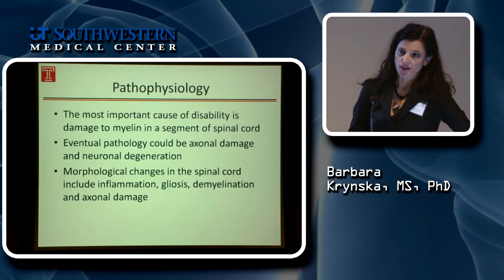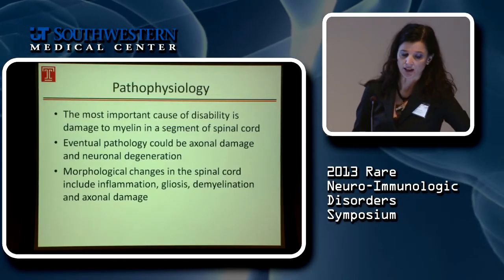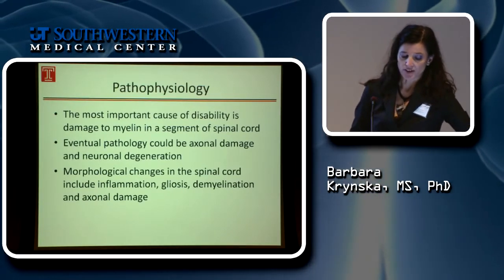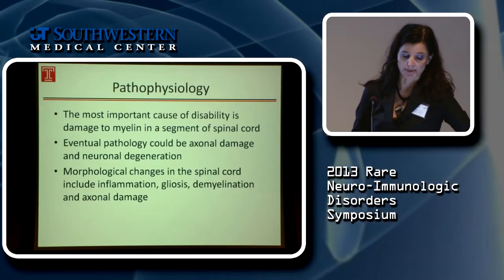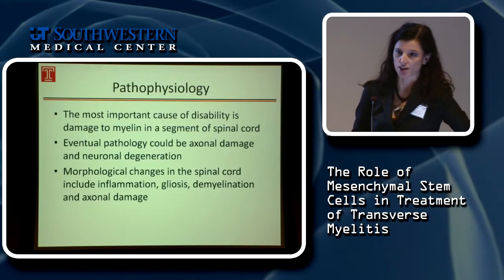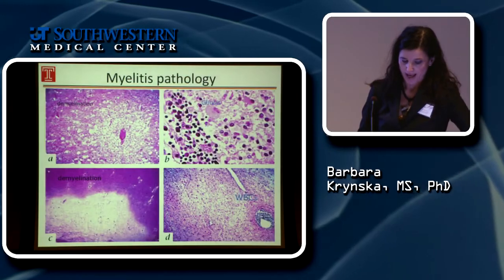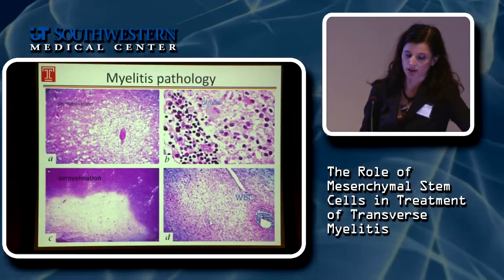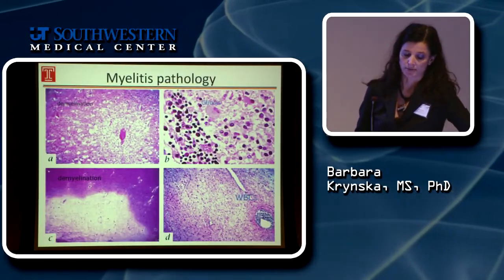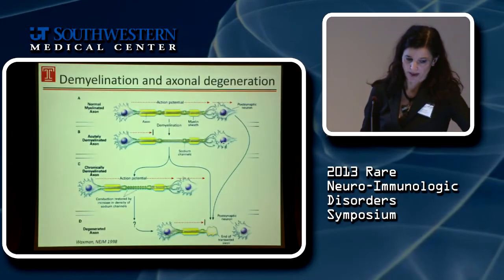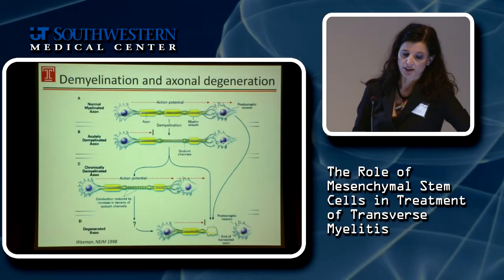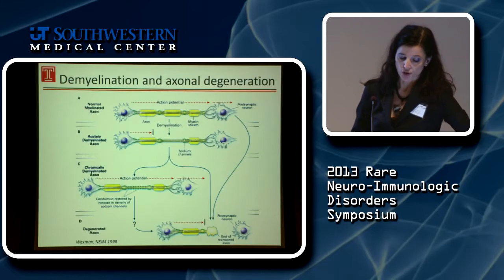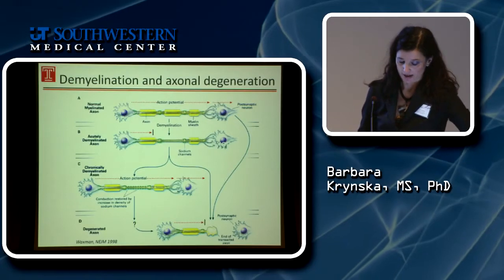The most important cause of this disability is damage to the myelin in the segment of the spinal cord, with eventual pathology including axonal damage or neuronal degeneration. The pathophysiological changes include inflammation, gliosis, demyelination, and axonal damage. Pathological slides show demyelination, activation of glial cells causing gliosis, and infiltration of white blood cells as a result of inflammation. The nodules of Ranvier are disrupted by redistribution of ion channels, which eventually leads to axonal degeneration.